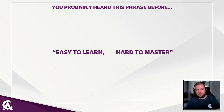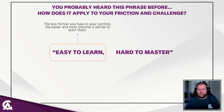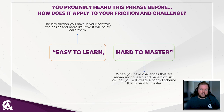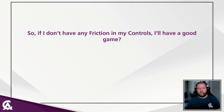This leads us to the dreaded phrase: easy to learn, hard to master. What does it mean in relation to friction and challenge? Easy to learn is basically the result of less friction in your controls — the less friction, the easier and more intuitive it will be to learn. Hard to master comes when you have challenges that are rewarding to learn and have high skill ceilings built into them. Reduce friction and increase challenges and skill ceiling — that results in an easy-to-learn, hard-to-master game.